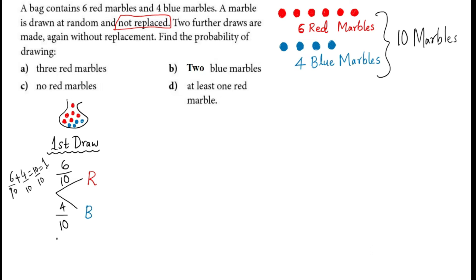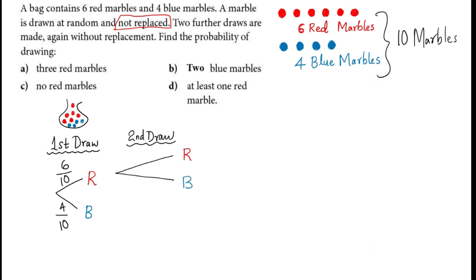Moving on to the second draw, you now have branches. Either you can pick red or blue again from each branch, giving four branches for the second draw. Now consider the condition where your first draw was a red marble.